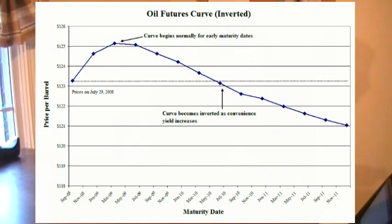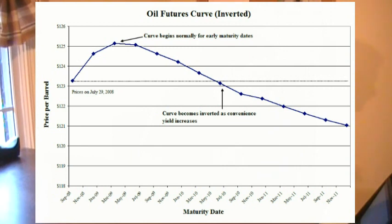Oil futures are a good example of an inverted futures curve. The current spot price of oil is about $123. For short maturity dates, the futures curve appears to be normal. However, as the maturity dates get longer and longer, the curve becomes inverted. The price per barrel for oil to be delivered in September of 2011 is slightly more than $121 per barrel — less than today's current spot price of $123 per barrel.